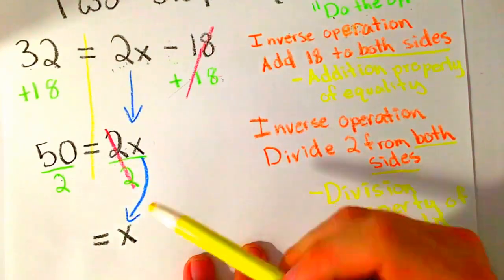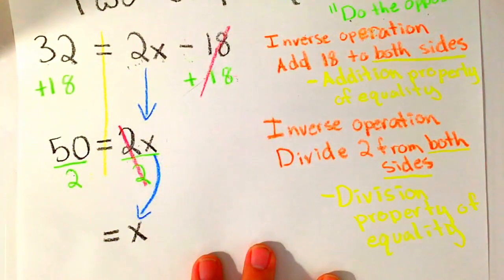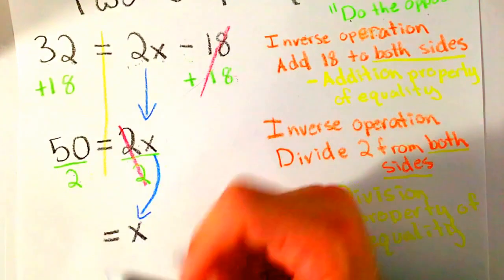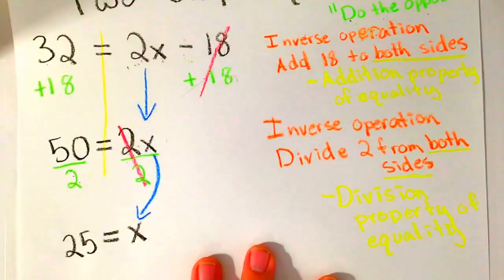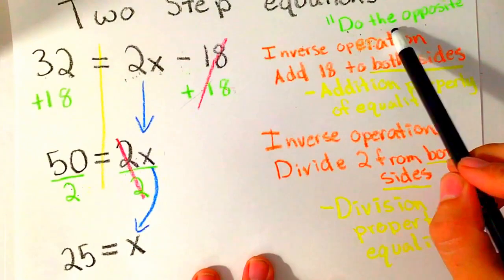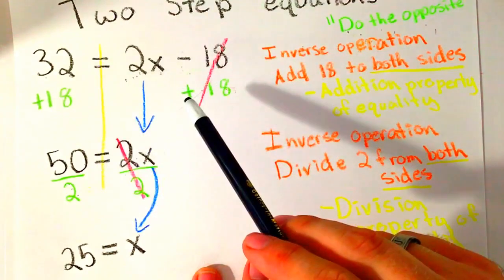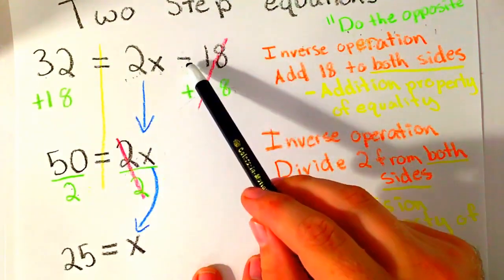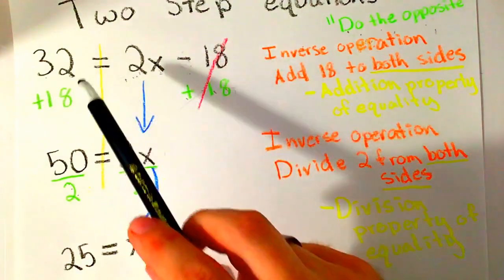Whatever I did to this side, I did to that side. I divided both sides. Now my last step: 50 divided by 2 is 25. Now I understand what I'm doing. I'm doing the opposite. Every step of the way, I'm looking for the opposite order of operations. I see minus 18, so I add 18. Whatever I do to one side, I do to the other.